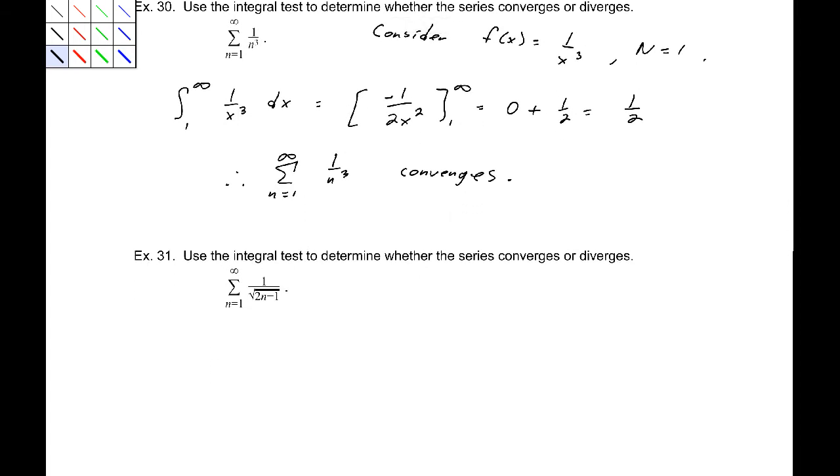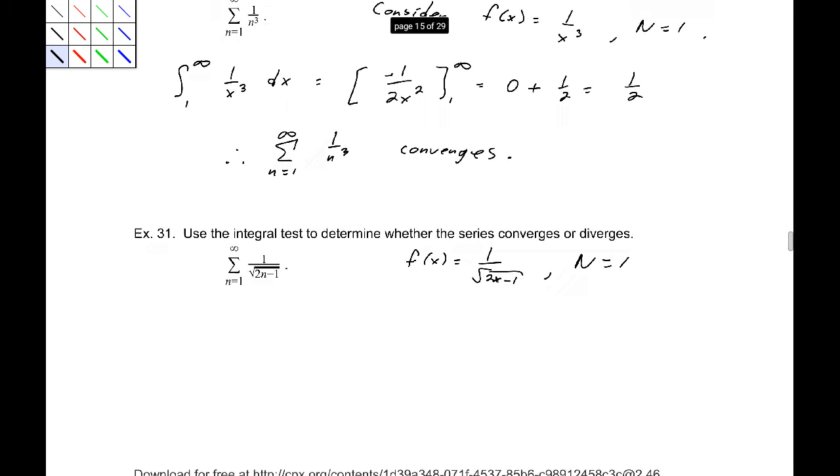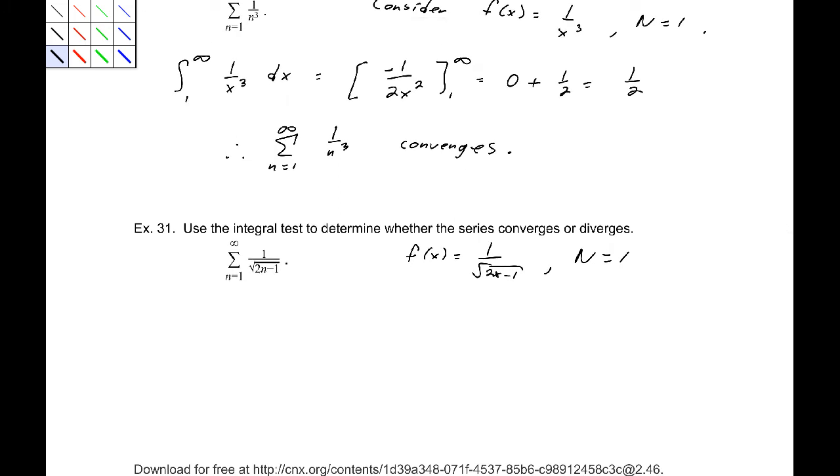Number 31. Here's the integral test. So again, let's take f of x equal to 1 over the square root of 2x minus 1. And let's go ahead and use cap N equal to 1 again. If that doesn't work, then we may need to choose a different value, but we'll start with that. Okay, so the integral from 1 to infinity of 1 over, I'm going to go ahead and write this differently. This is 2x minus 1 to the negative 1 half dx.